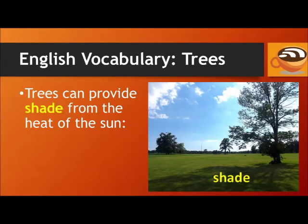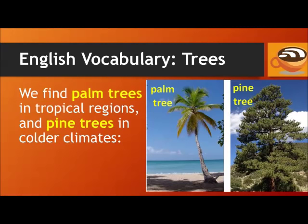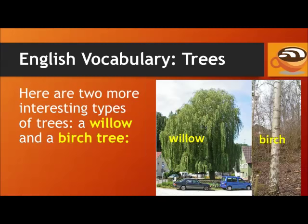Trees can provide shade from the heat and light of the sun. We find palm trees in tropical regions, and pine trees in colder climates. Here are two more interesting types of trees: a willow and a birch tree.